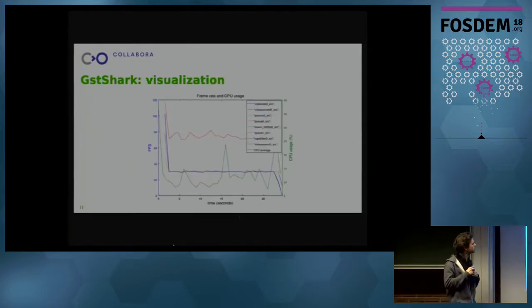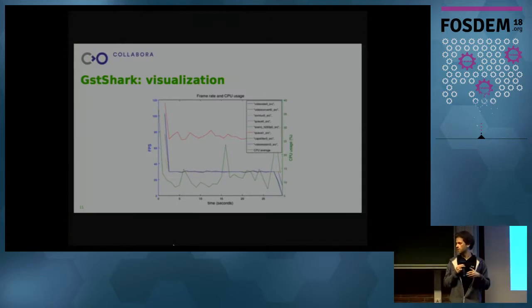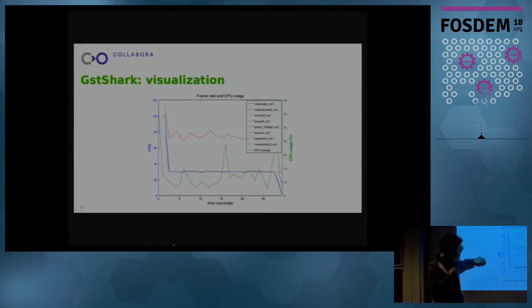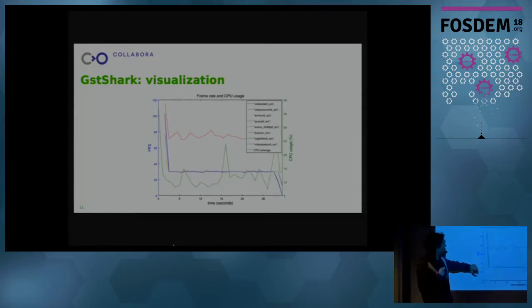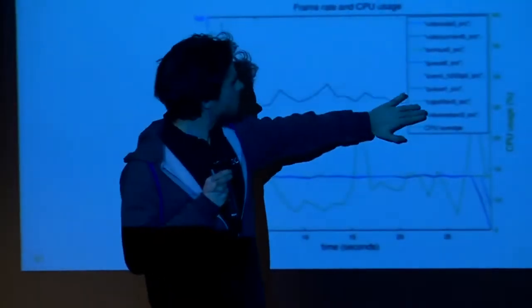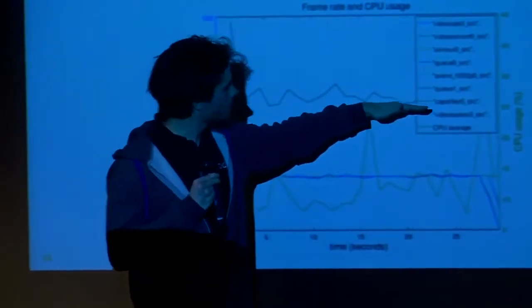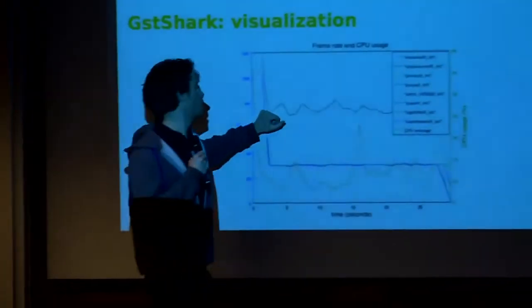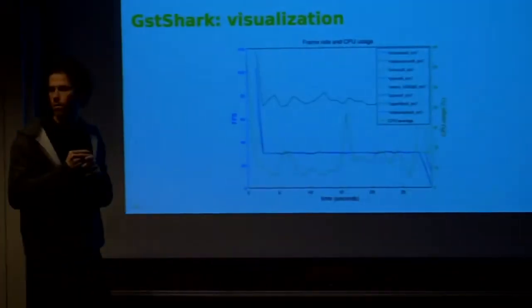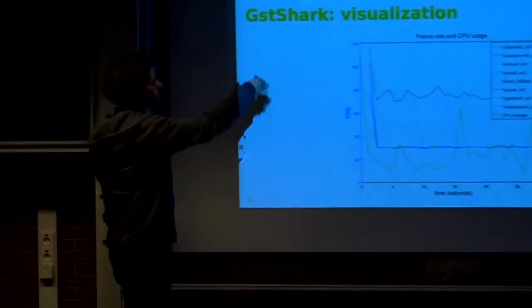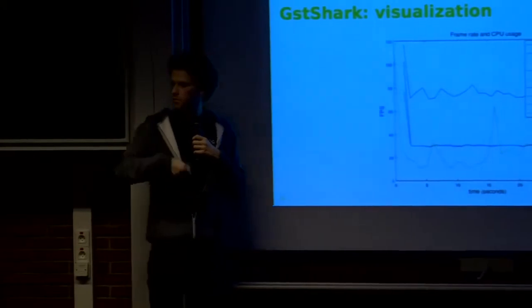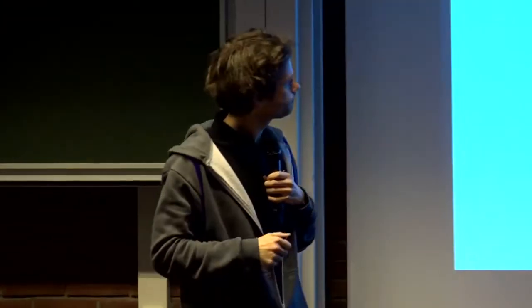Another nice thing with GST Shark is it comes with scripts to generate graphics using gnuplot from the data generated by the tracers. So you can see things like — here we have the time in seconds, here we have all the elements: the source, the encoder, the decoder, and so on. On the left it will tell you at which rate each element is operating, and here you have the CPU load. So you can see how activity is affecting the whole pipeline. If you see a big spike somewhere, you may ask yourself: this should not happen on my pipeline. And start debugging from there.